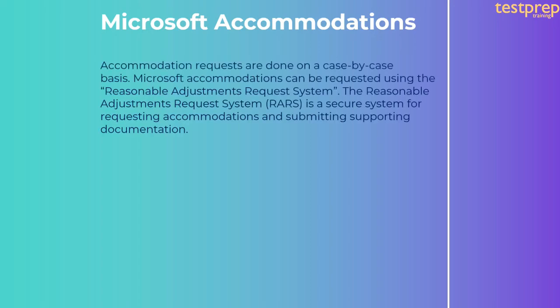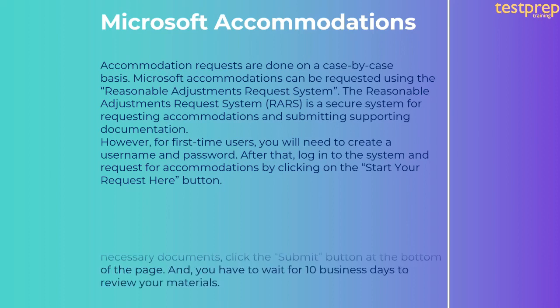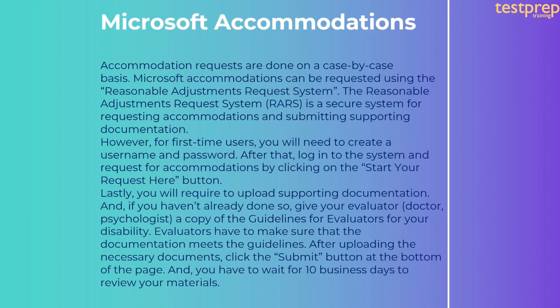Microsoft accommodations: accommodation requests are done on a case-by-case basis and can be requested using the Reasonable Adjustments Request System, which is a secure system for requesting accommodations and submitting supporting documentation. For first-time users, you will need to create a username and password, log into the system, and click the 'Start your request here' button. You will need to upload supporting documentation and provide your evaluator — doctor or psychologist — with a copy of the guidelines for evaluators. After uploading the necessary documents, click the Submit button and wait 10 business days for review.